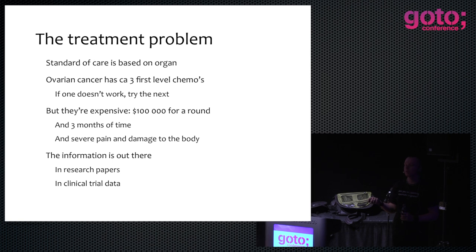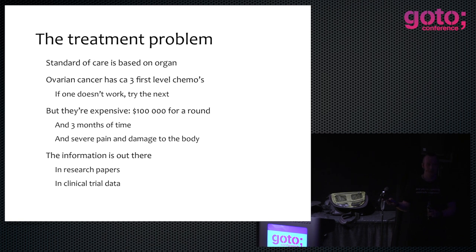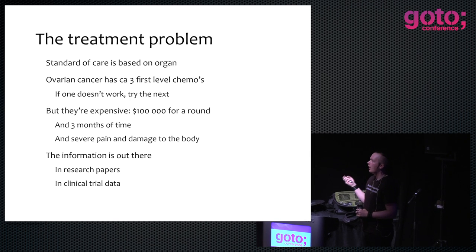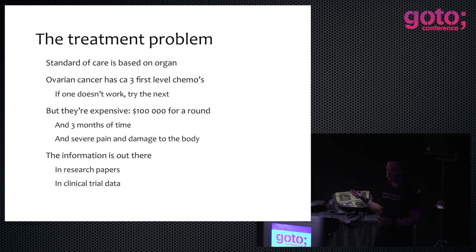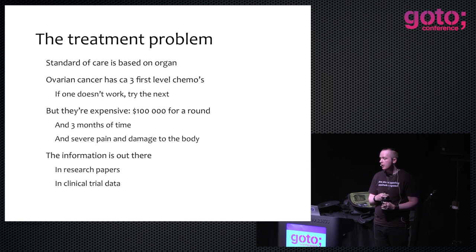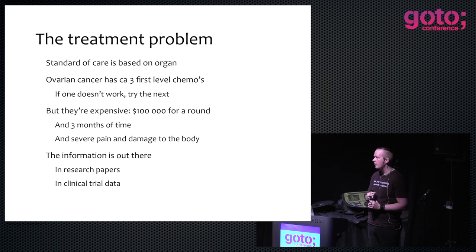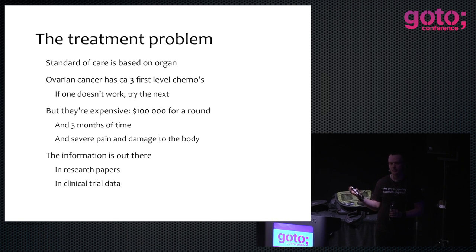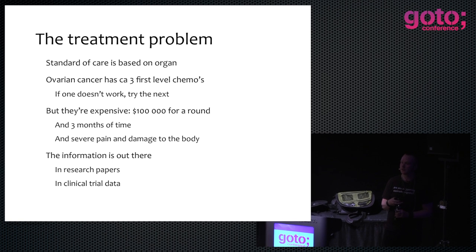The doctor has no real basis for making the choice between one of these three chemos — so if it doesn't work, try the next one. Chemotherapy is extremely painful, expensive — around a hundred thousand dollars for a round — and three months of time with extreme suffering and damage for the patient. So it's very important to make the right choice first. If you get ovarian cancer, three months of time can be the difference between life and death.